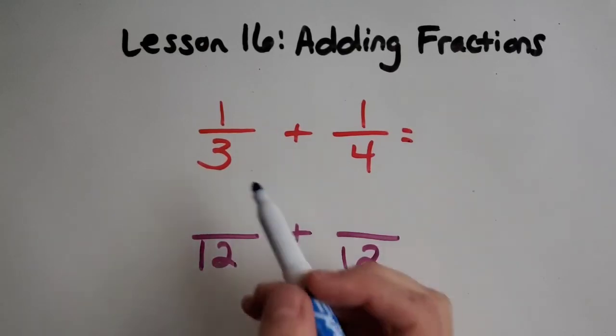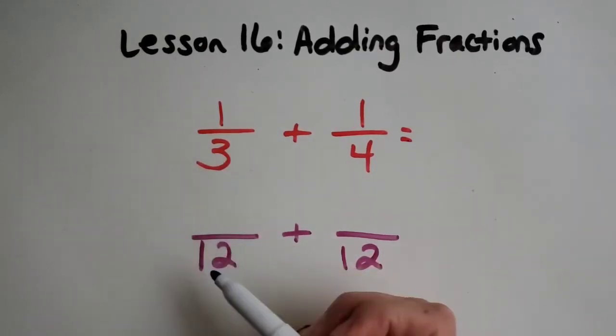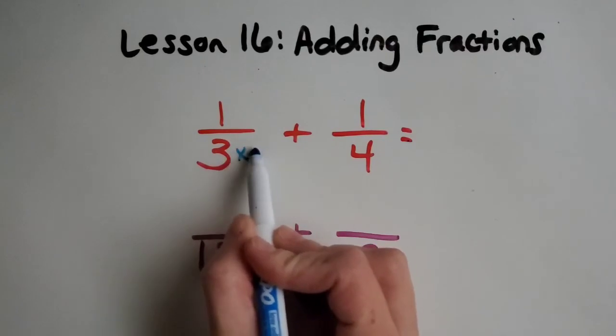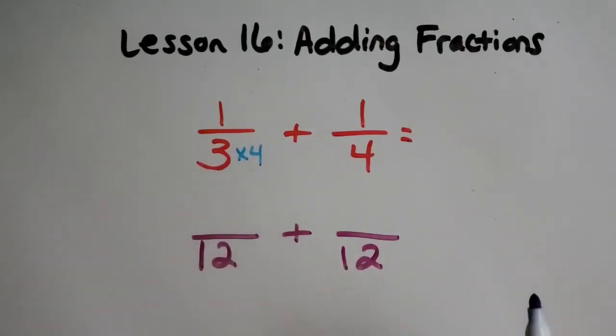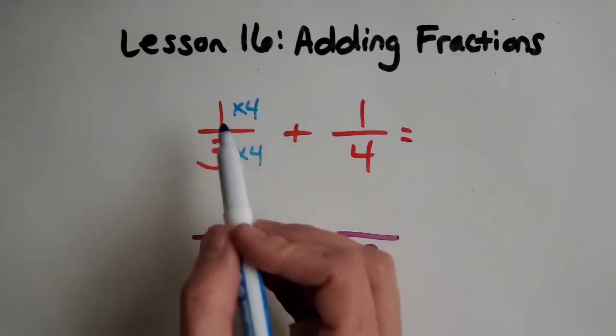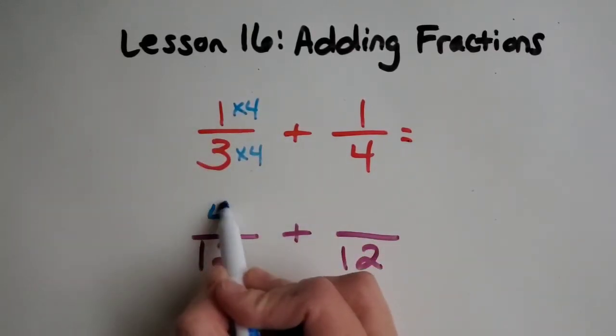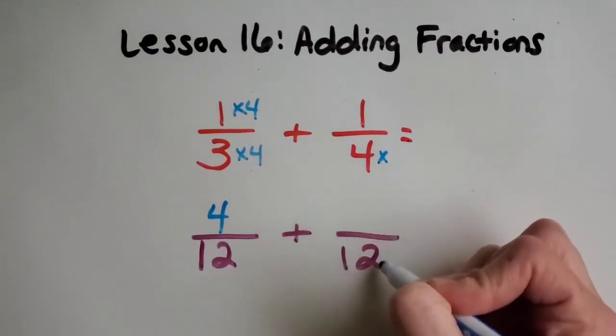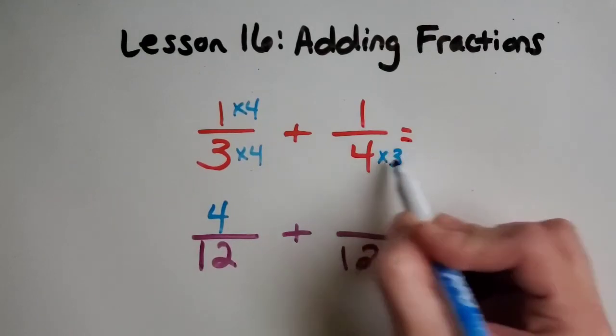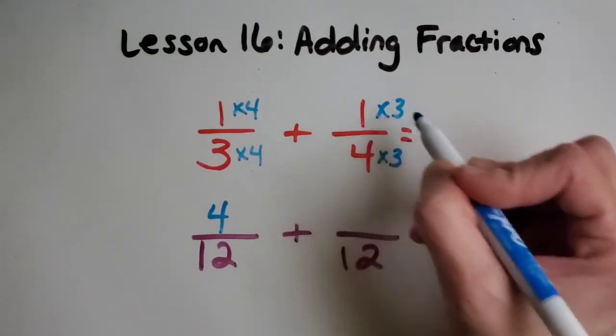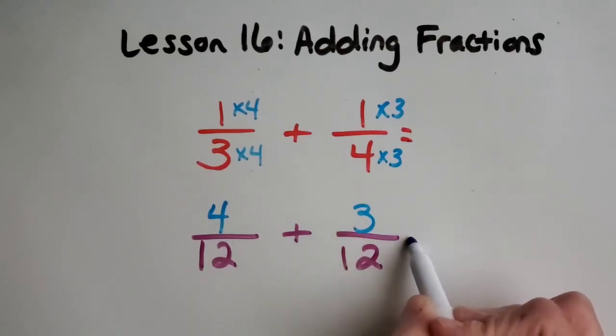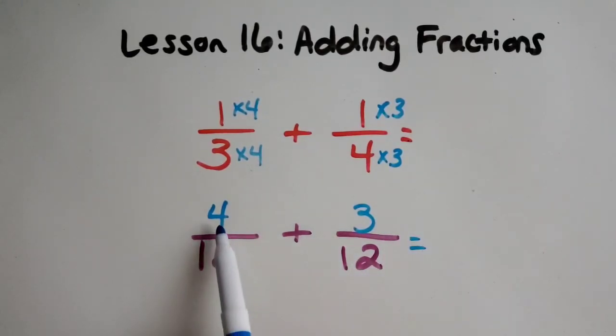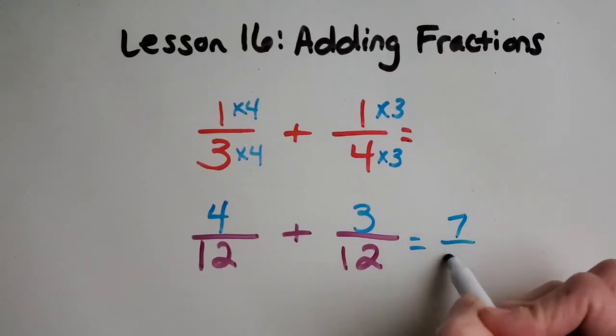So that means we need to change both fractions to have a denominator of 12. And then we just need to ask ourselves, how do I get from three to 12? You probably said times four, so we want to do that to the top, the numerator also. One times four is four. Let's do the same thing over here. Four times what equals 12? Good, three. So we're going to do the same to the numerator. Then it's just a matter of four plus three. Easy peasy. Seven twelfths.